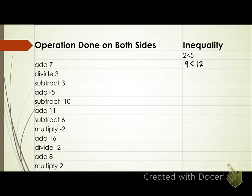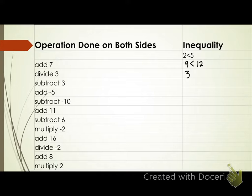Now let's divide both sides by three. Nine divided by three is three. Twelve divided by three is four. What's my inequality symbol? Less than. Very good.